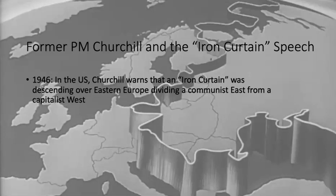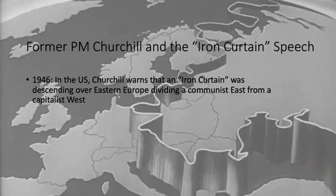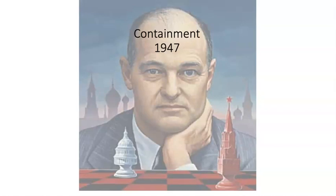The famous Iron Curtain speech is given by Prime Minister Winston Churchill in 1946 — the term really sticks, describing an Iron Curtain dividing Eastern Europe from the capitalist West. Pictured here is George Kennan, the political chess master. In 1947, he writes under the name Mr. X because he's actually in the administration and it would be a big deal if he put his name on the article.